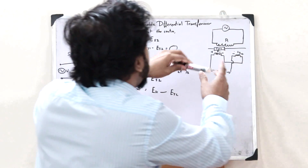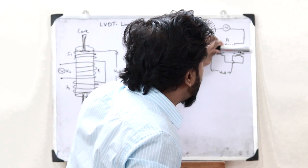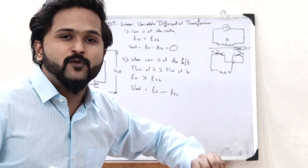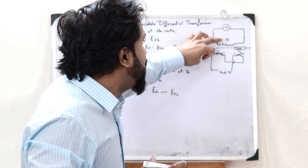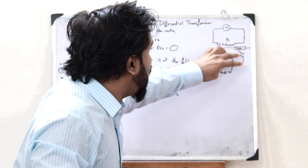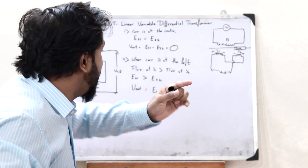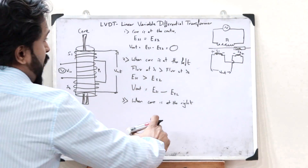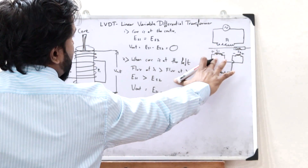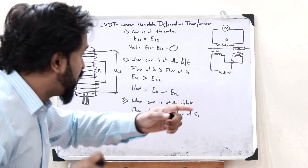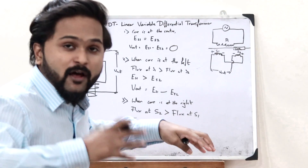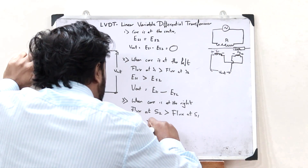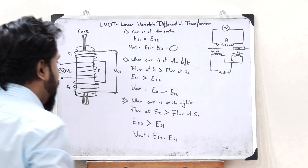Next condition: let us displace the core towards the right. When the core is at the right position, the magnetic flux linked between P1 and S2 is greater than that linked between P1 and S1. More EMF gets induced in S2 rather than S1. The flux at S2 is greater than the flux at S1, so the EMF induced in S2 is greater than in S1. Therefore, Vout equals ES2 minus ES1.